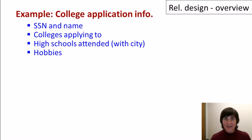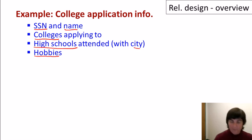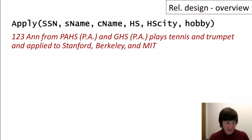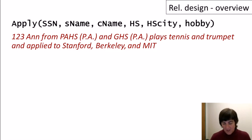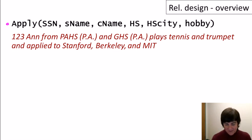Let's consider the process of designing the schema for a database about students applying to colleges. For a given student, we have their social security number and their name, the colleges that student is applying to, the high schools they attended and what city those high schools were in, and the students' hobbies. We can create a single relation called 'apply' that has one attribute for each of those pieces of information. Let's take a look at how that database would be populated.